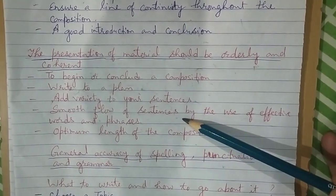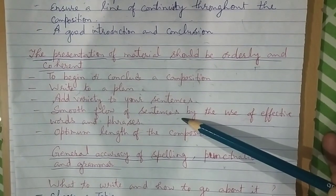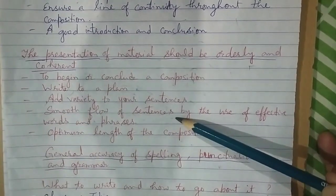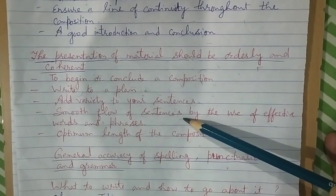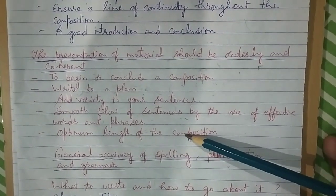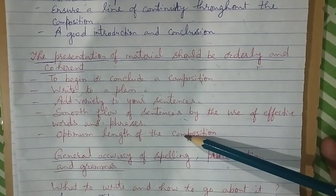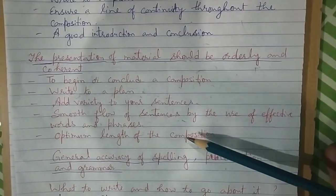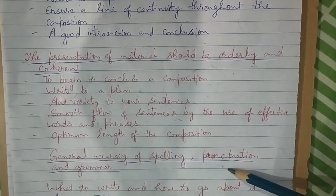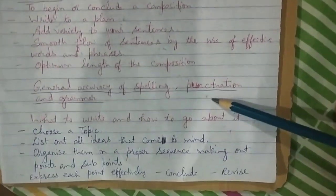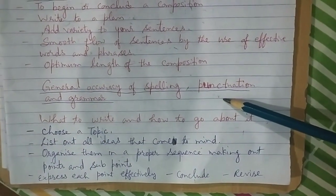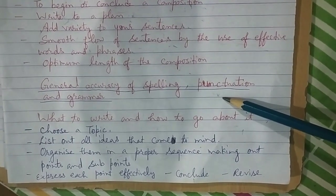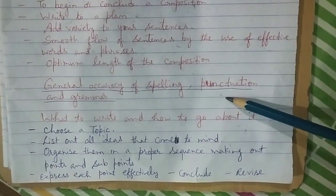Next is smooth flow of sentences by the use of effective words and phrases. Phrases are used to connect sentences so that they flow smoothly and are coherent. Next is optimum length of the composition — try to limit your composition to 350 to 400 words, which would be about 3 handwritten pages. General accuracy of spelling, punctuation and grammar is important. You must correct mistakes by editing your composition, for which you must spare 5 minutes of your time.